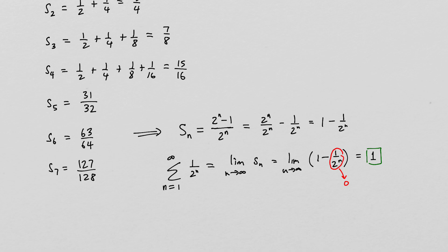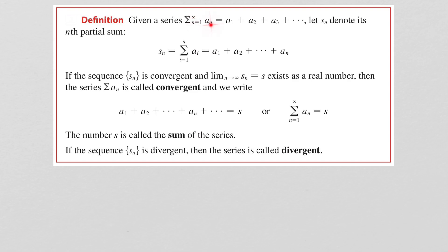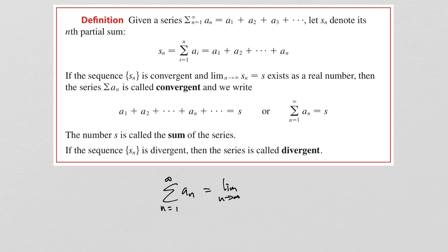This leads to an important definition. Given a series sum n equals 1 to infinity of a_n, let S_n denote its nth partial sum — that is, the sum from i equals 1 to n of a_i, which is just adding up the first n terms. If the sequence of partial sums is convergent and the limit as n goes to infinity of S_n equals S, then we say the series is convergent and we write the sum equals S. In other words, the sum n equals 1 to infinity of a_n equals the limit as n goes to infinity of S_n, provided that limit exists.